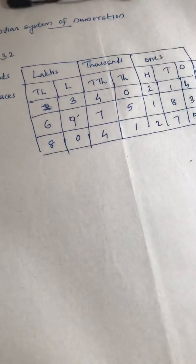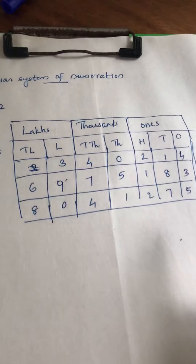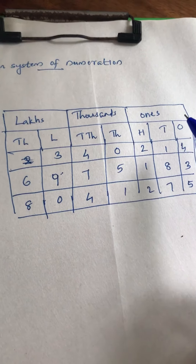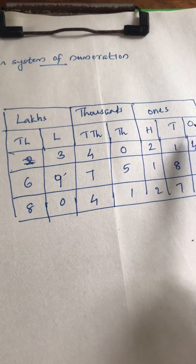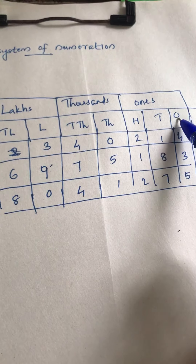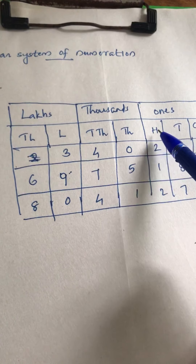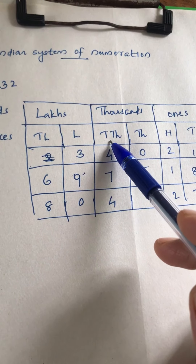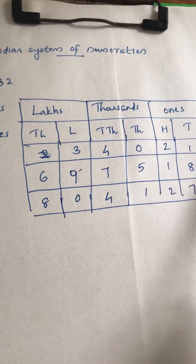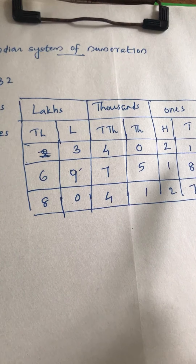Just like the international system, the Indian system of numeration also has different places and periods. First, we can discuss the periods and places. The first places are the same as the international system: ones, tens, hundreds, then thousands, ten thousands. Up to that, all places are the same as the international system.